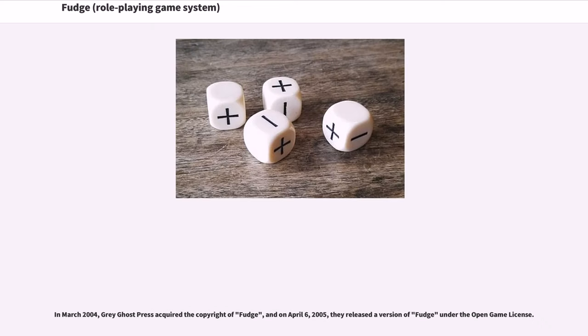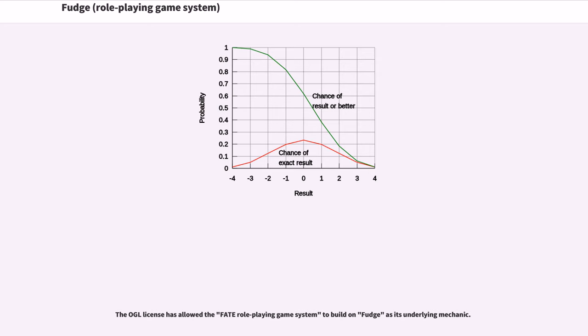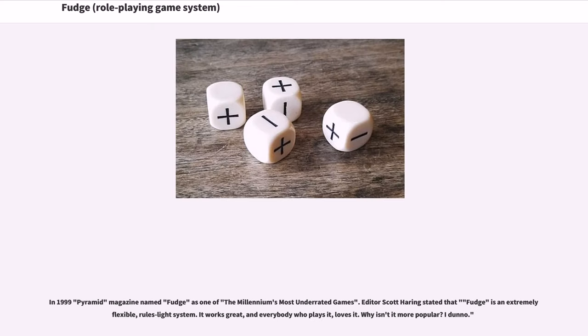In March 2004, Grey Ghost Press acquired the copyright of Fudge, and on April 6, 2005, they released a version under the Open Game License. The OGL license has allowed the Fate role-playing game system to build on Fudge as its underlying mechanic.